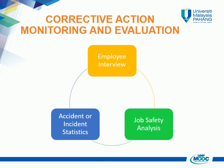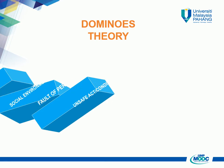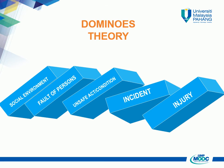Moving on to accident causation theories. We will discuss three of the most common theories: domino theory, multi-causal theory, and human factor theory. The domino theory was first put forward by H. W. Heinrich in the 1930s.